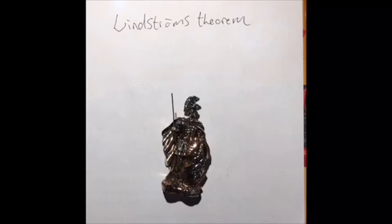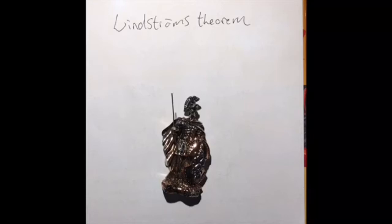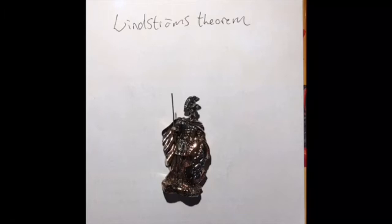Since L has Löwenheim-Skolem number ℵ₀ and phi is satisfiable, phi has a countable model. By the small vocabulary property, we may assume that V is countable. We then describe a structure M having U ∪ V as its underlying set. The vocabulary for M is V_EF = V ∪ {P_U, P_V, R₁, R₂, ...}.